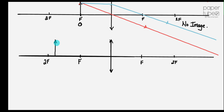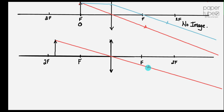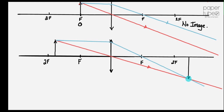So the first ray, which is the red one — a ray through the center is undeviated. I'm taking my time; it has to be done accurately. Second ray, which is the blue one — a ray parallel to the principal axis is refracted through f. I'm taking my time, making sure I get it right. Where the two cross, that's going to be my image. There's the image.